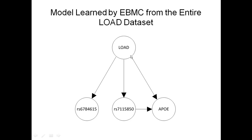Looking more at EBMC and the LOAD dataset: from the entire 300,000-plus SNPs, EBMC's learned model contained only three SNPs with predictive value. ApoE is known to be the greatest risk factor for Alzheimer's disease. The SNP RS7115850 is on the GOB2 gene and was found to interact with ApoE — this substantiates previous results showing GOB2 and ApoE do interact to cause LOAD. RS6784615 was also found to be a predictor by itself, and there have been studies linking this SNP to LOAD. These three SNPs alone achieved an AROC of over 0.7.